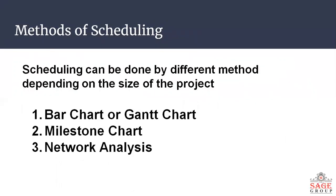Scheduling can be done by different methods depending on the size of the project. The first method is the bar chart or Gantt chart, the second is the milestone chart, and the third is network analysis.